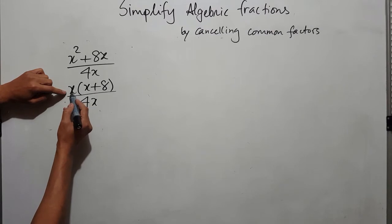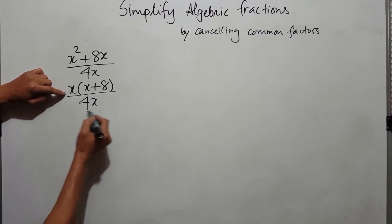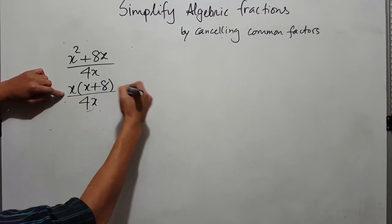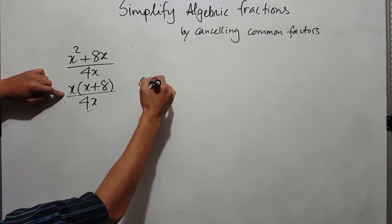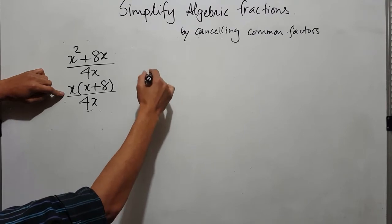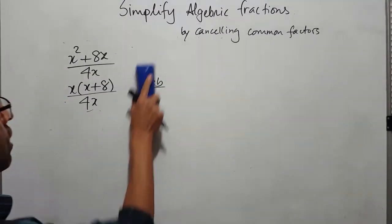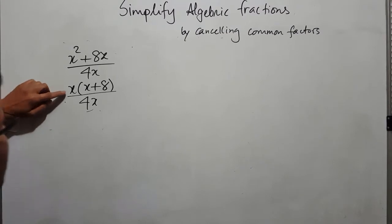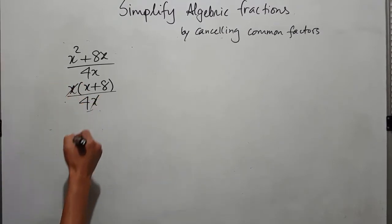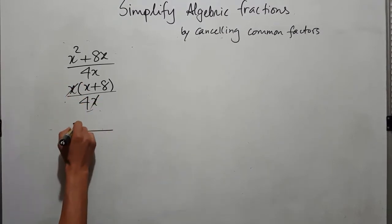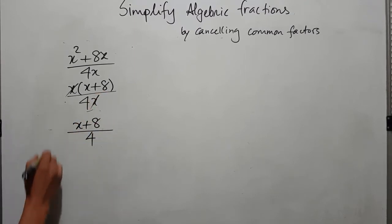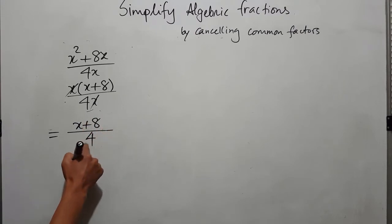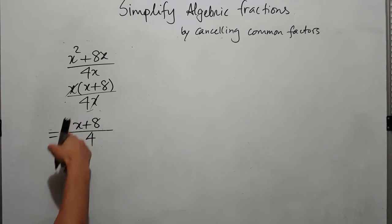It is like a times B over C — you can cancel because these are in a times relation, and anything in the numerator can be cancelled with the denominator. So x and x cancel, leaving x plus 8 on top and 4 on the bottom. You can't cancel 4 and 8 because that 4 is shared for both terms, so (x + 8)/4 is the final answer.